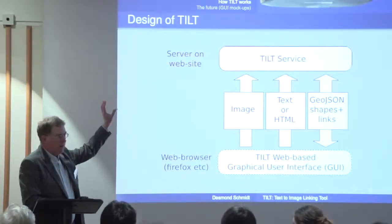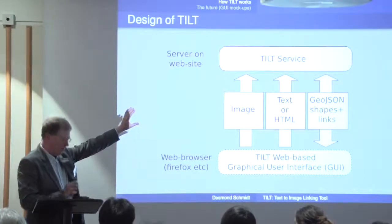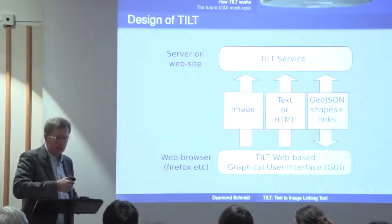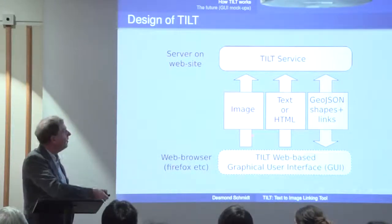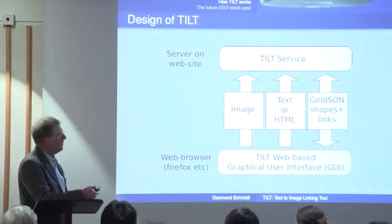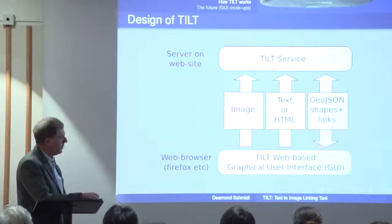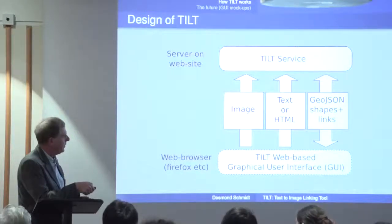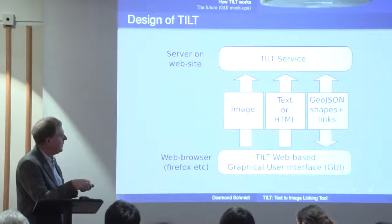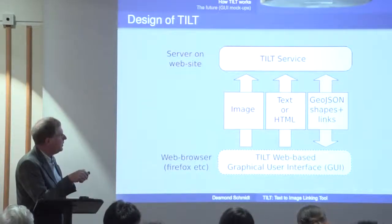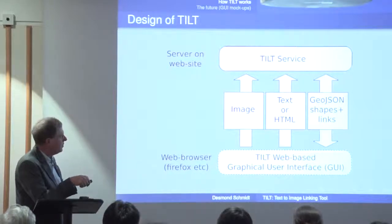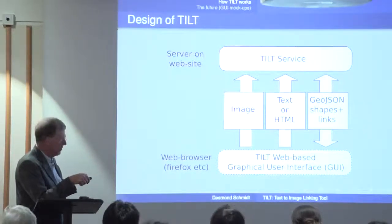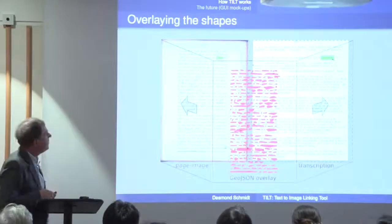This is version two of TILT — version one was all-in-one. Version two divides the typical page recognition process: there's a page recognition service, a Java service designed for high speed using an image processing library, and a GUI at the bottom which is mostly incomplete, for user interaction to refine the recognition process. The web interface sends the image to the service, the server responds with its recognized shapes and links, and you also send the text to be linked — either plain text or HTML.